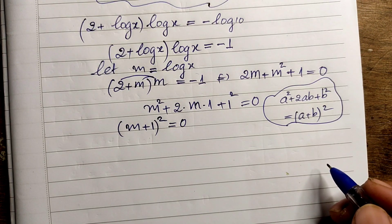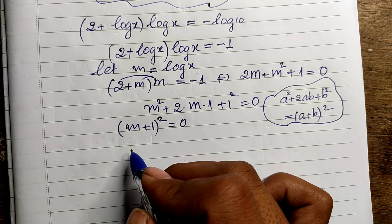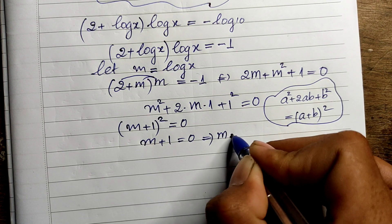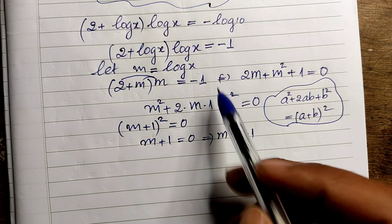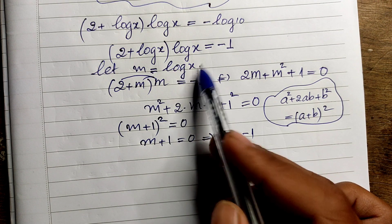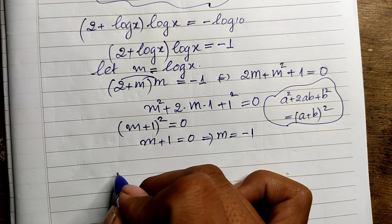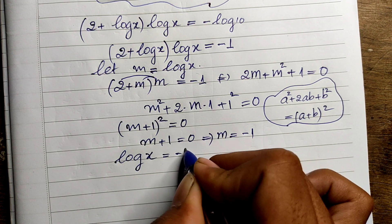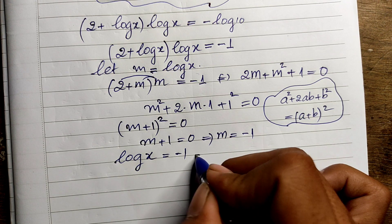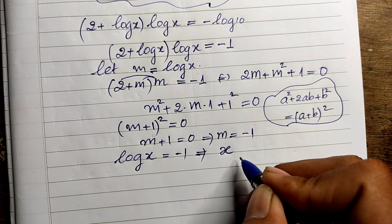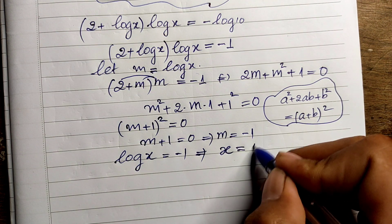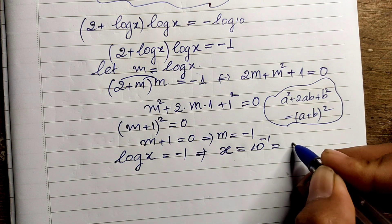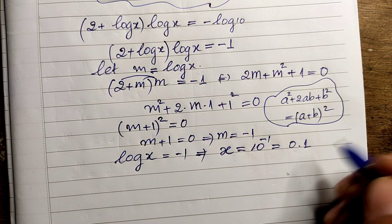So we get m plus 1 equals 0, therefore m equals minus 1. Since m equals log base 10 of 8, we have log base 10 of 8 equals minus 1. This gives us x equals 10 to the power of minus 1, which equals 0.1.